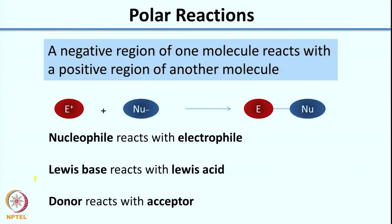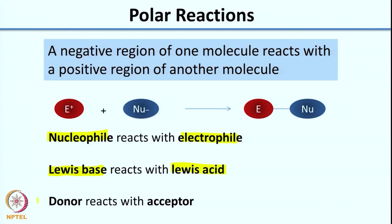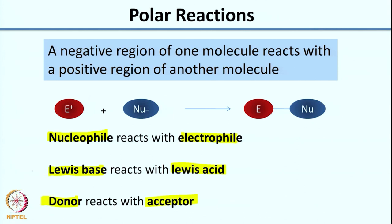A polar reaction is one where a negative region of one molecule reacts with a positive region of another molecule — essentially you have charged intermediates. You can have a positively charged intermediate reacting with a negatively charged intermediate. In many textbooks you will see terms like nucleophile, electrophile, Lewis base, Lewis acid, donor, acceptor — essentially what all that means is you have some electron-rich species and some electron-deficient species.